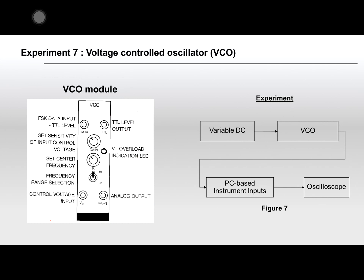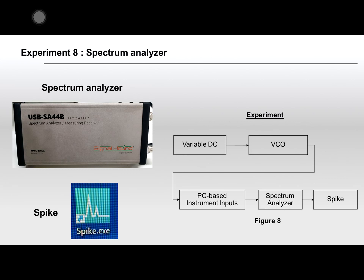The next module is the Voltage Controlled Oscillator. Using this module, you can generate a signal and control its frequency using a DC voltage. In the experiment, use the Variable DC Module as an input — put the DC voltage into the input here and you will get the output here. Then see how you can control the frequency of your signal when you adjust the tunable in the Variable DC Module.